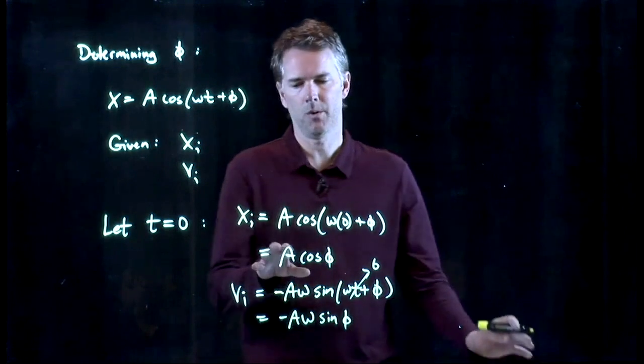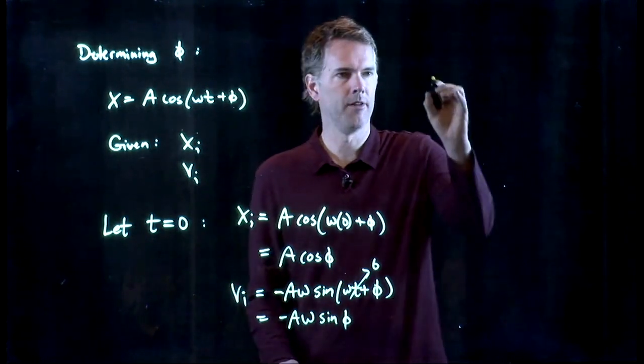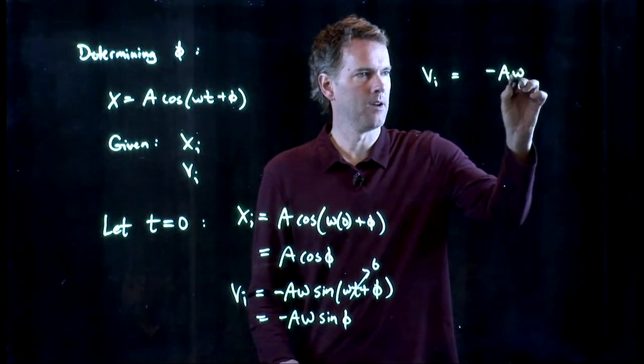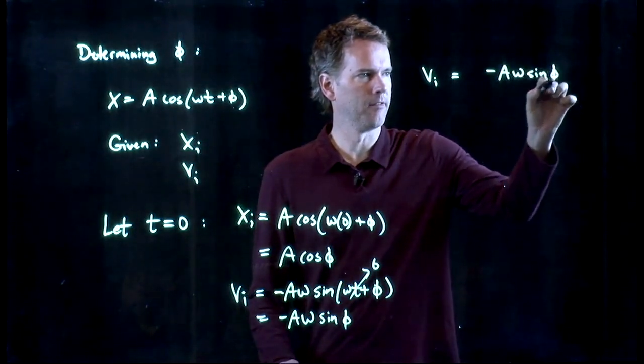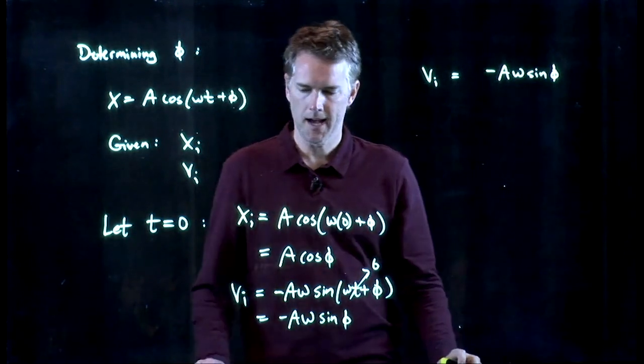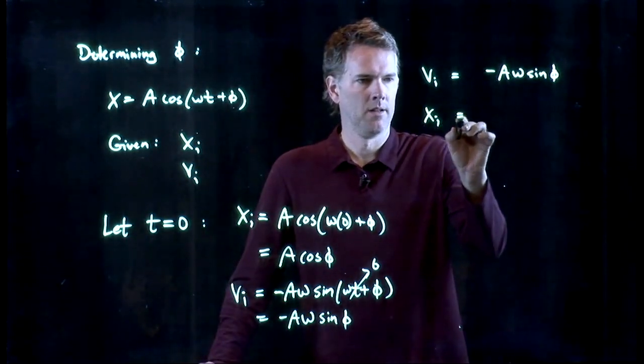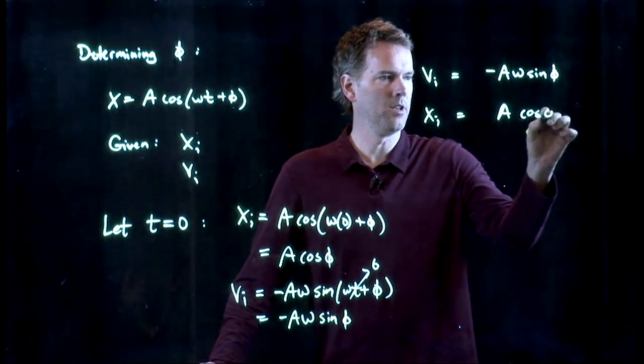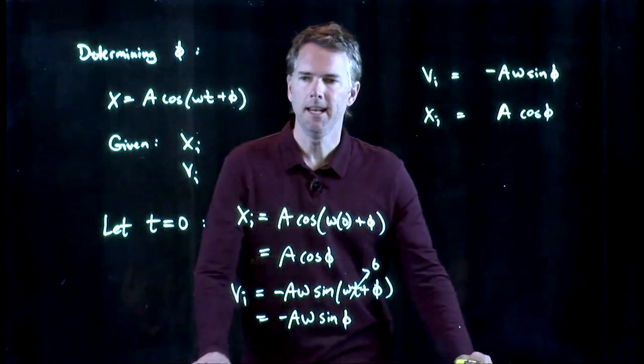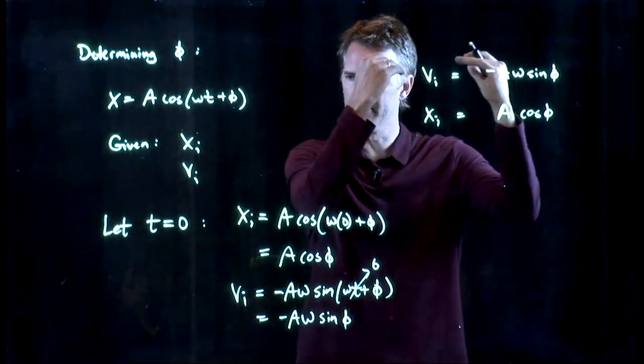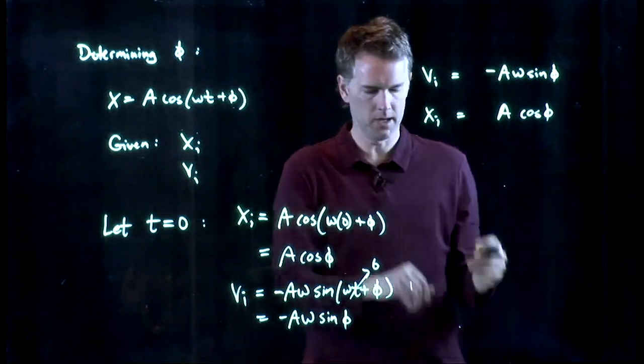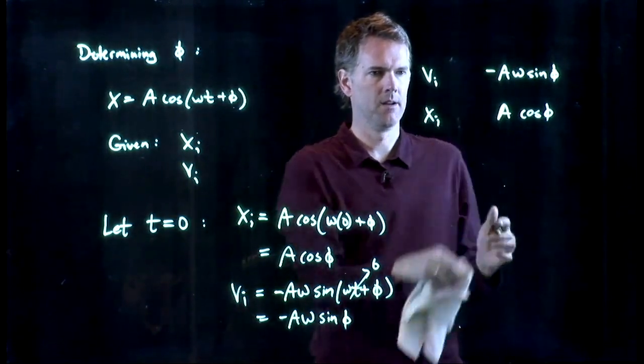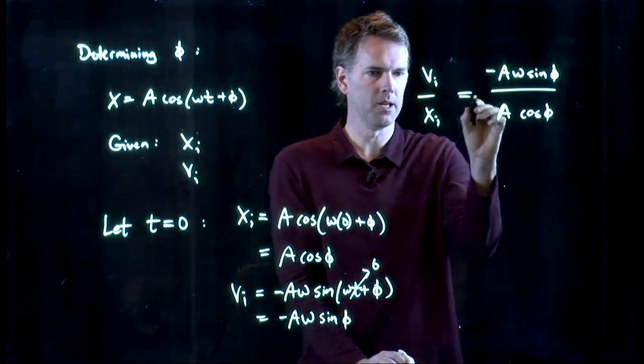And so I have two equations here. I have vi, which equals negative a omega sine phi. And I have xi, which equals a cosine phi. And anytime I have two equations, I can always divide one equation by the other. So let's take this equal sign out of here.